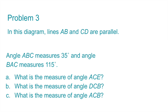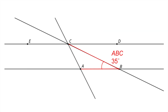Number 3. In this diagram, lines AB and CD are parallel. Angle ABC measures 35 degrees and angle BAC measures 115 degrees. The questions ask for the measure of angle ACE, the measure of angle DCB, and the measure of angle ACB. I'm going to go back to the diagram and figure out all the missing angles, then come back to A, B, and C.